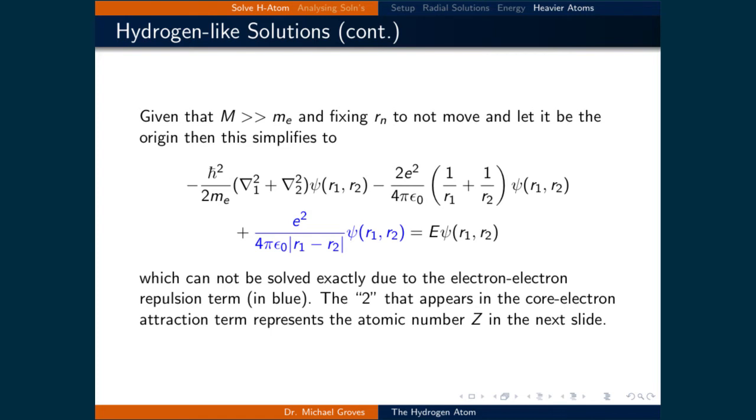The mass of the nucleus is much larger than that of an electron. We can also assume that the nucleus will move much slower than the electrons. Given these assumptions we can say that the nucleus is fixed and we're going to let it be the origin.